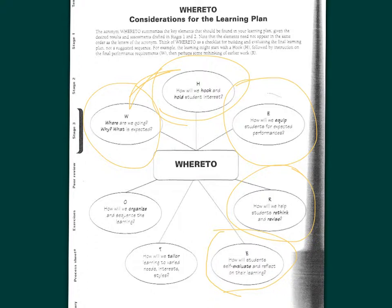The T is for Tailor — this is differentiation for exceptional learners, gifted students, and various purposes. We need to tailor learning to different needs, interests, and styles, which might include looking at multiple intelligences. The O is very much about the teacher's work of organizing and sequencing the learning — the scope and sequence of the work. These are broad considerations for your learning plan; you're not going to make a list of 'here are my W's, here are my H's' — it's a mindset.